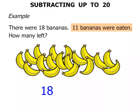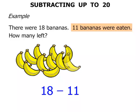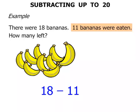11 bananas were eaten. So we're going to subtract 11. Get rid of 11. 1, 2, 3, 4, 5, 6, 7, 8, 9, 10, 11. 11 bananas gone.